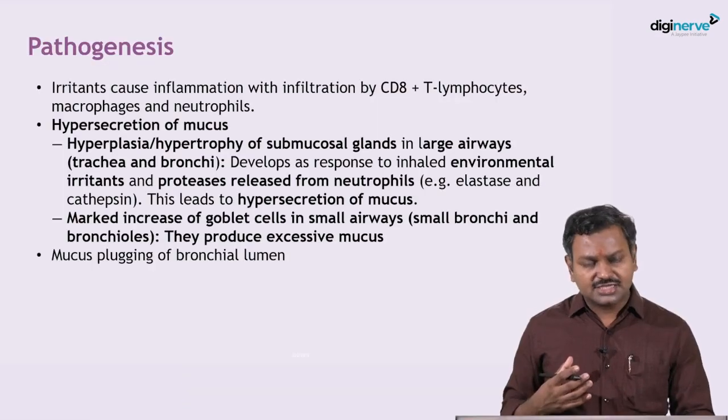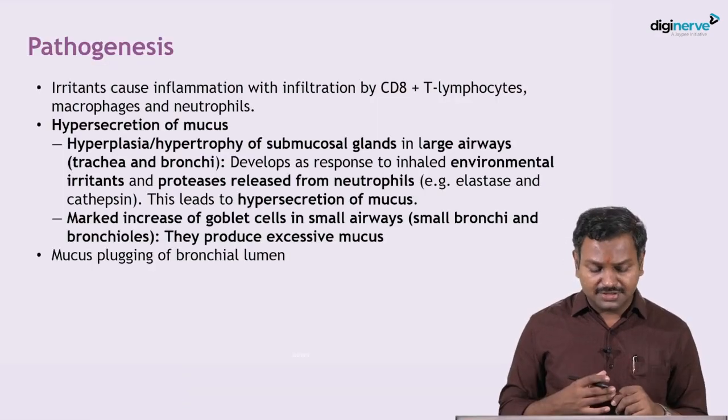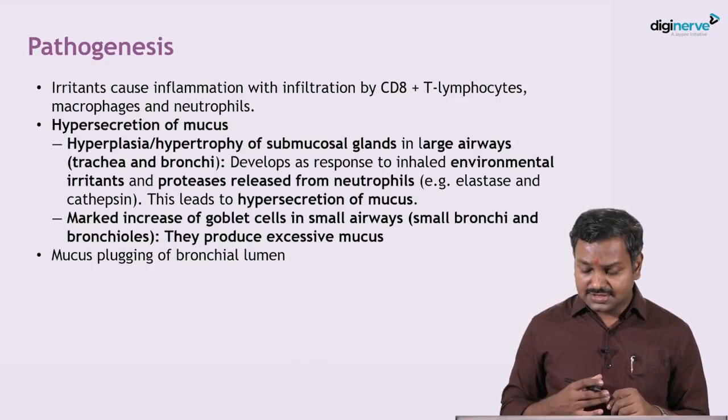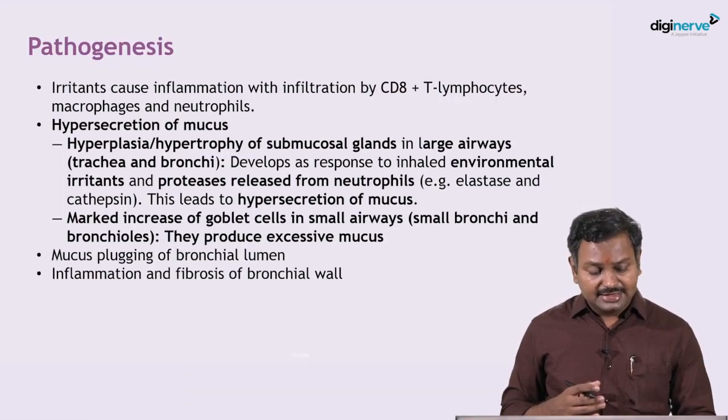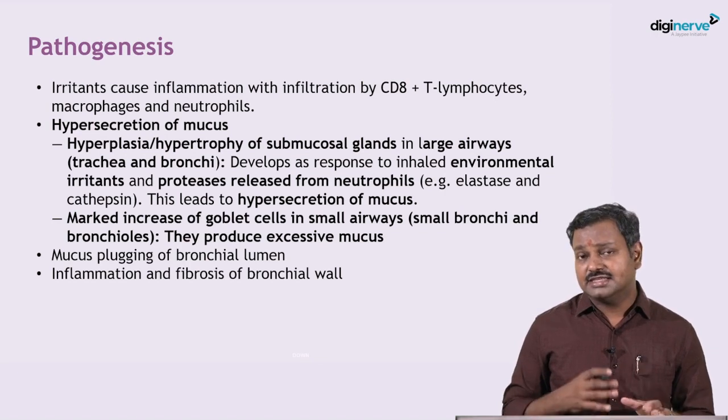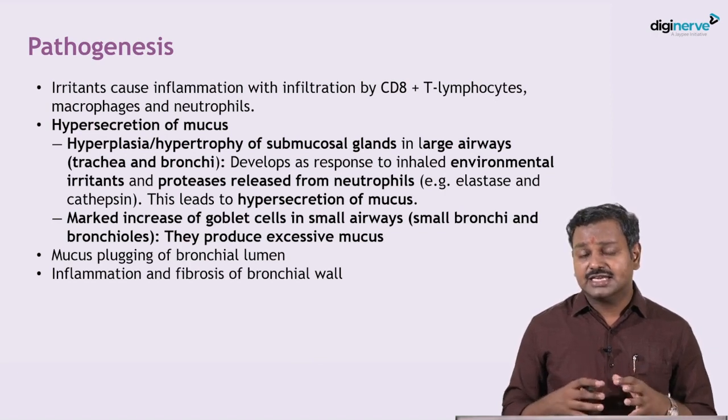The goblet cells in the smaller airways also undergo hyperplasia, so there is excessive mucus secretion. This mucus can plug the lumen of the bronchus, and simultaneously the inflammatory cascade produces inflammation of the bronchial wall.